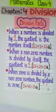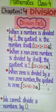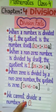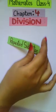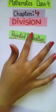And lastly, we need to keep in mind that we cannot divide a number by 0. So we need to keep these division facts in mind before doing any division sum. Next I will be showing you about division by repeated subtraction.